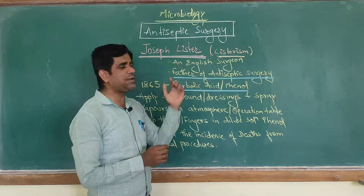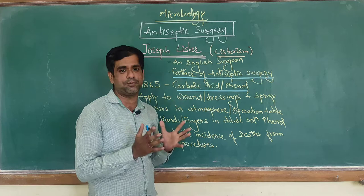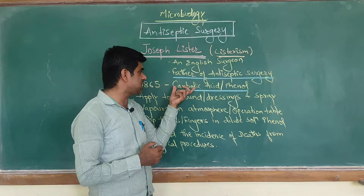Antiseptic Surgery. Sir Joseph Lister, an English surgeon, is regarded as the father of antiseptic surgery. After trying various chemicals for chemical antisepsis in 1865, he used carbolic acid or phenol.